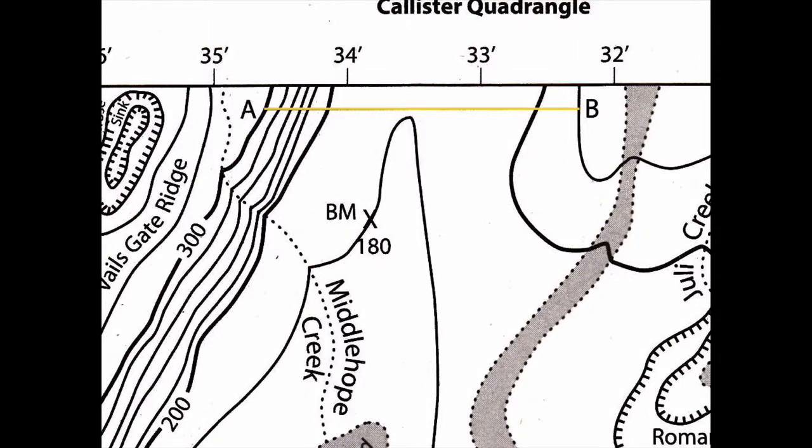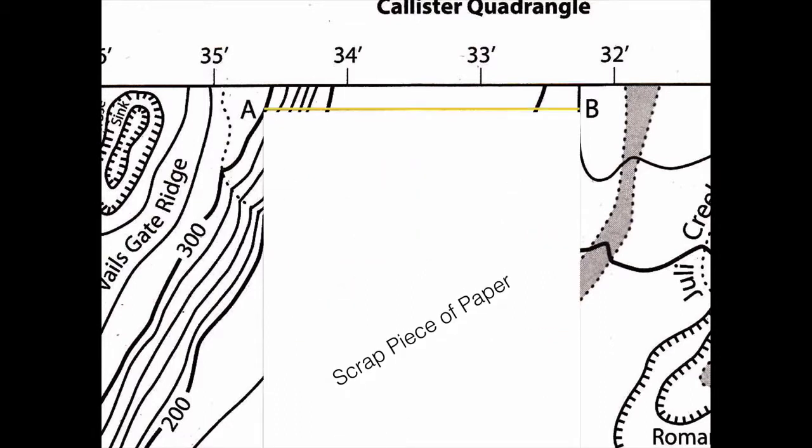So here are the steps that you need to follow. The first step would be to get a scrap piece of paper. Next, you want to mark off all the spots where the contour lines cross line A to B. And I use little hash or dash lines that demonstrate those crossing points.